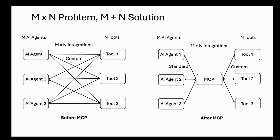MCP solves this problem by introducing a common language between clients and servers. It reduces the problem from M by N connections to just M plus one connections. This way, any client can access any server automatically.